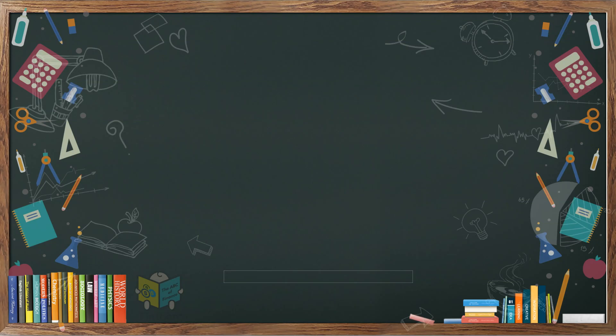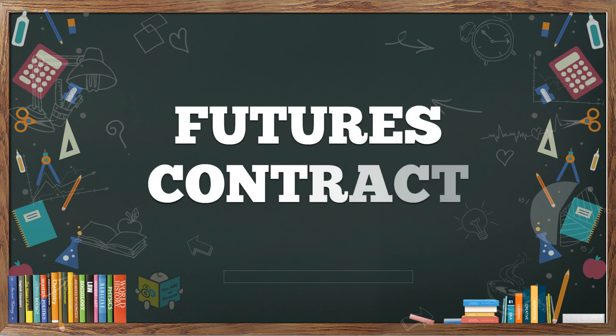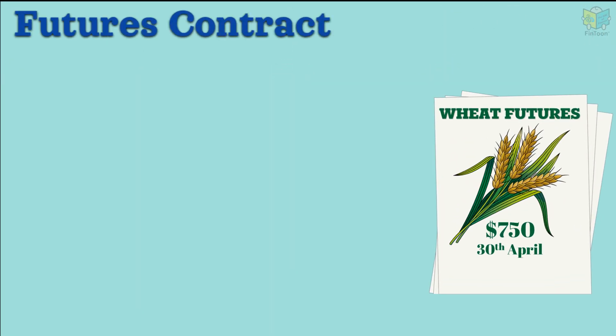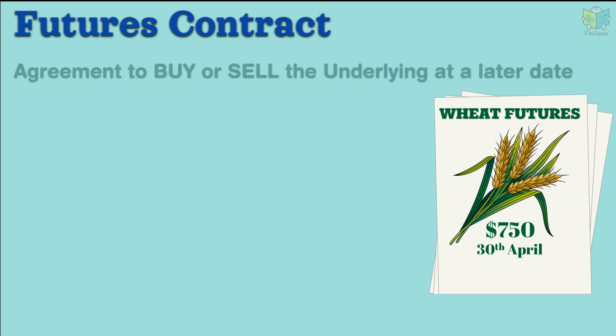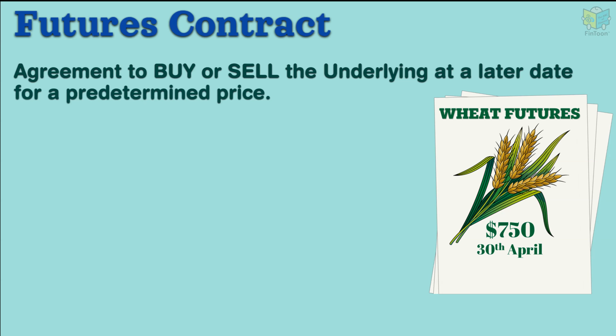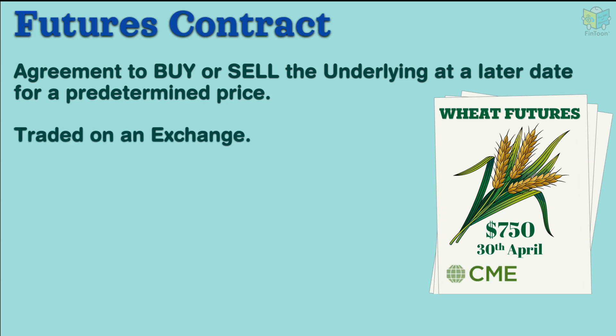Hello everyone! Today we are going to learn about the Futures Contract. A futures contract is very similar to a forward contract and is also an agreement to buy or sell a physical or financial asset at a later date for a predetermined price. However, unlike forward contracts, futures contracts are traded on an exchange and are regulated.